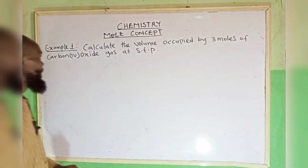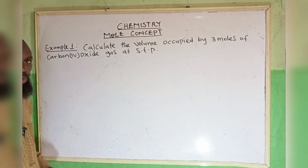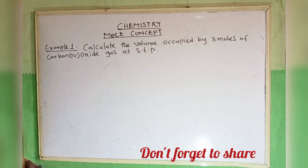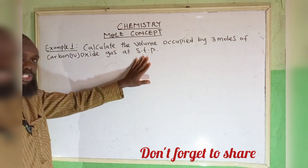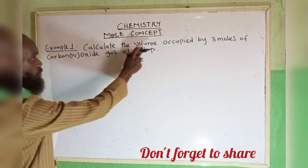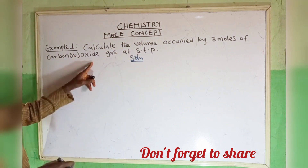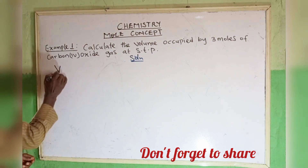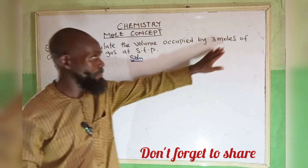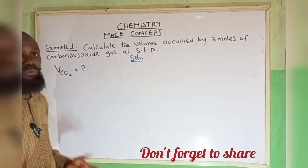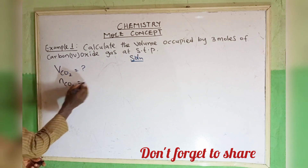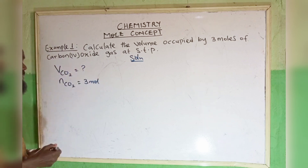Example one: calculate the volume occupied by three moles of carbon dioxide gas at STP. Don't forget, STP means standard temperature and pressure. So we want to calculate the volume of carbon dioxide — that is unknown. Given: the amount of carbon dioxide, represented with n, is given as three moles.